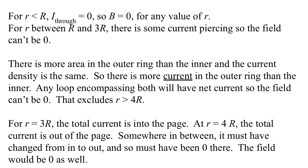Two long hollow concentric conducting cylinders carry currents in opposite directions into and out of the plane. The currents are unequal but the current density J is the same for both cylinders. The question asks: in which region can the magnetic field be zero at some non-zero finite distance r? For r less than the inner radius R, there's no current piercing the Amperean loop, so there is no magnetic field — that region must have zero field and so cannot be a region where it's conditionally zero.